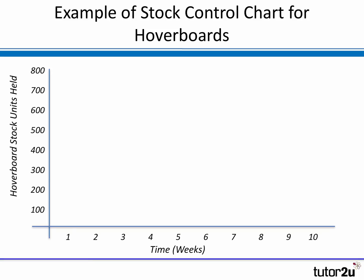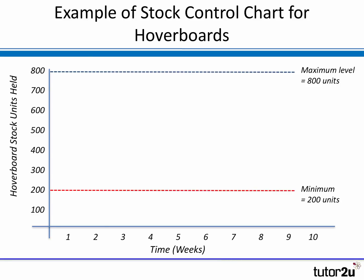Thinking about our stock of hoverboards, we know that the maximum we can hold at any one time, because of the size of our storeroom, is 800 units — 800 hoverboards. That's our maximum level. However, we would like to make sure that we always have at least 200 hoverboards in stock, which is known as our minimum level, just to handle any unusual orders or to account for delays in supply from the wholesaler. The minimum quantity we want to hold is 200, and therefore 200 is what you would know as the buffer stock.